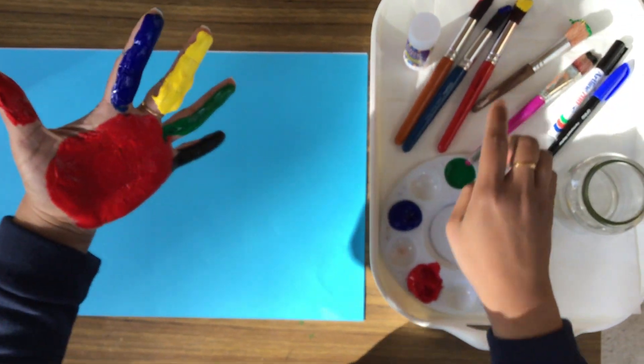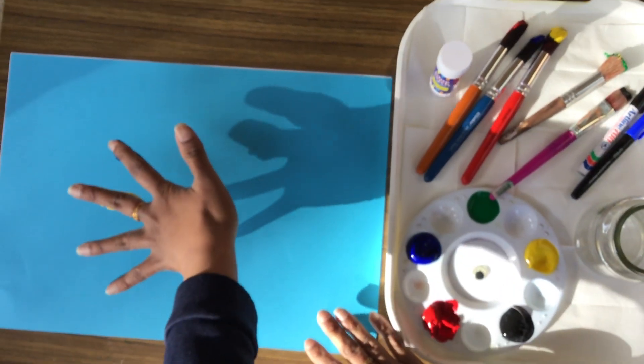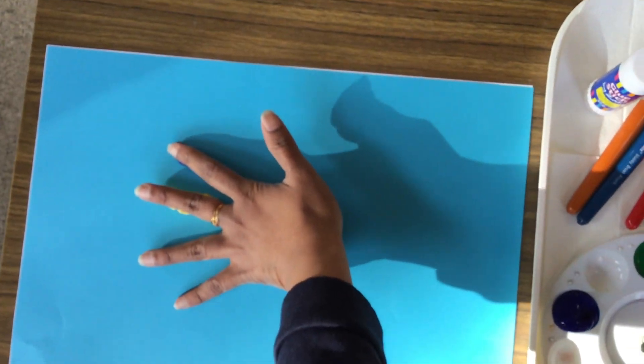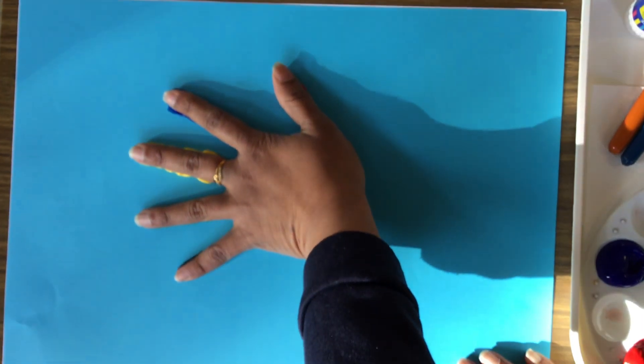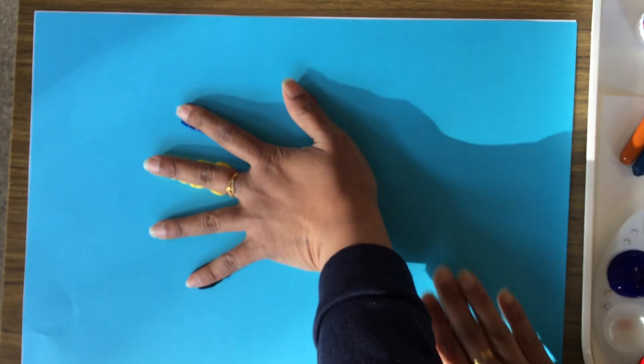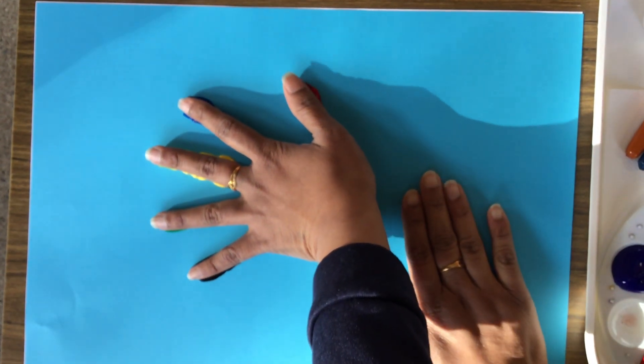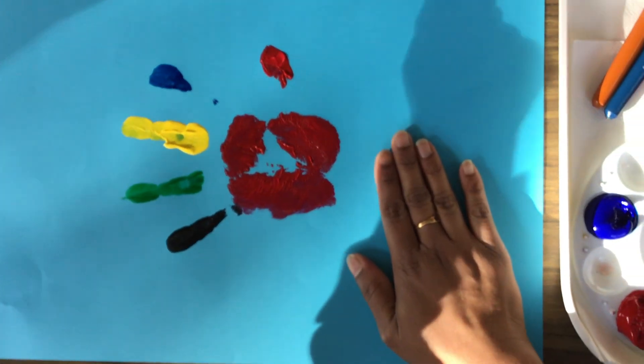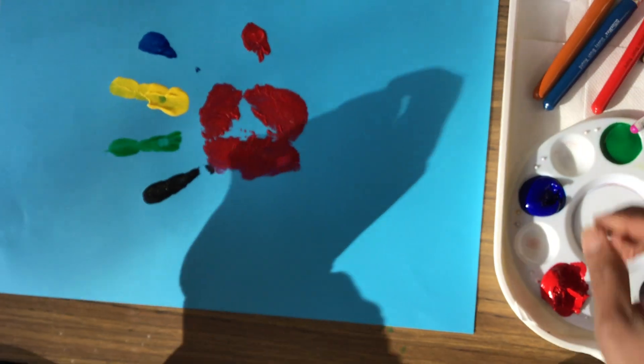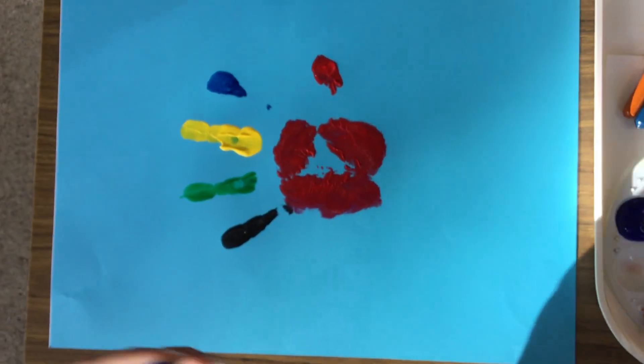And then you slowly turn your arm and press it on the paper very gently. And then hold the paper and lift your arm up. And you get that, and then once you do that you wash your hand.